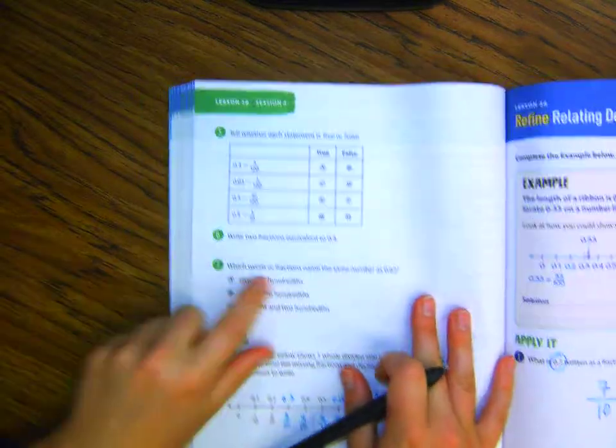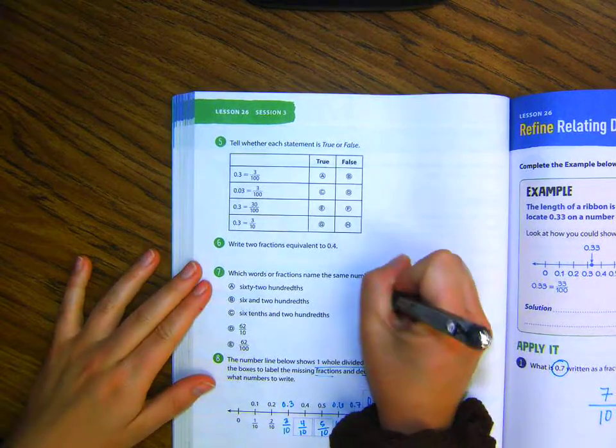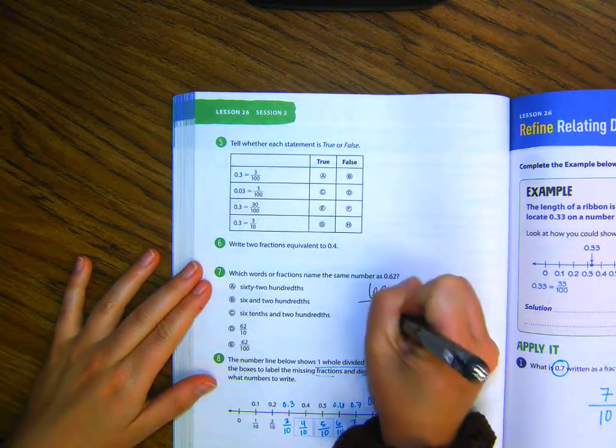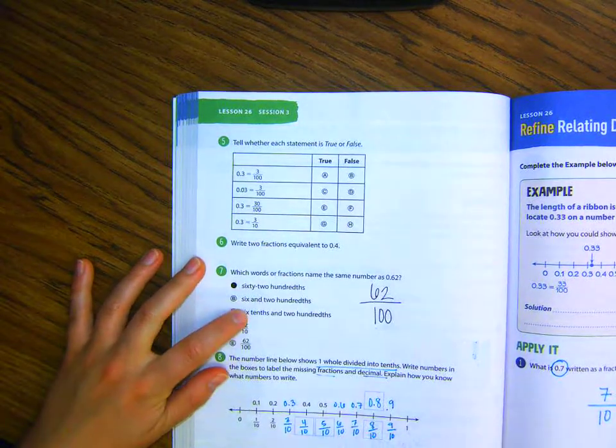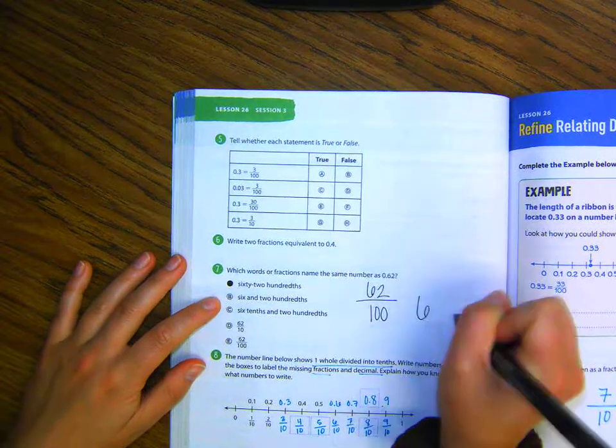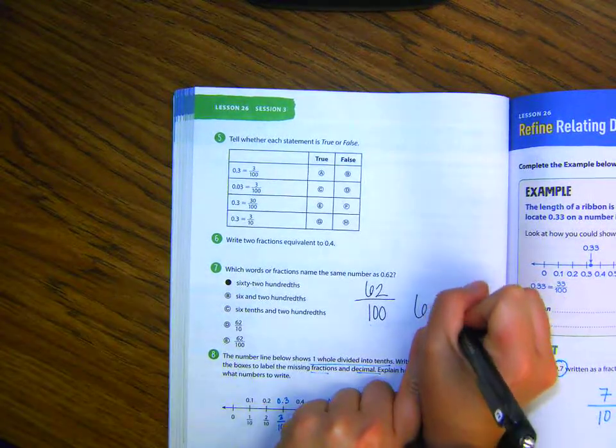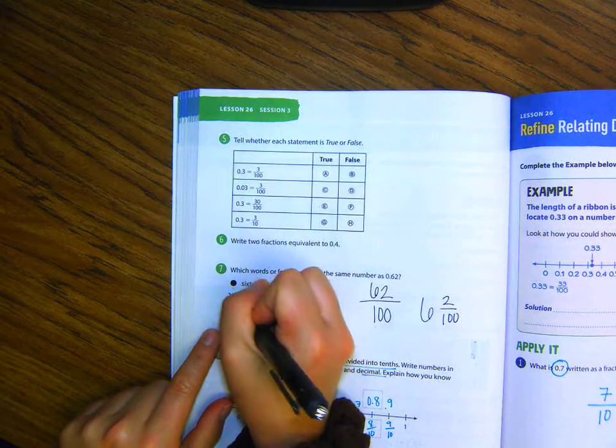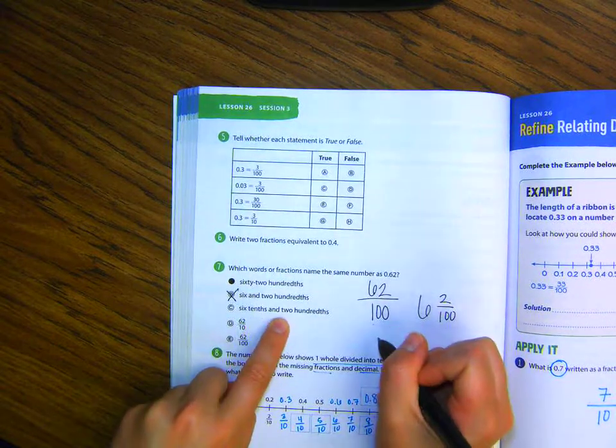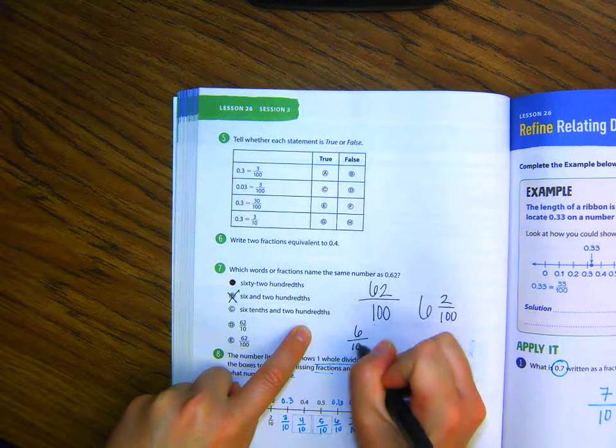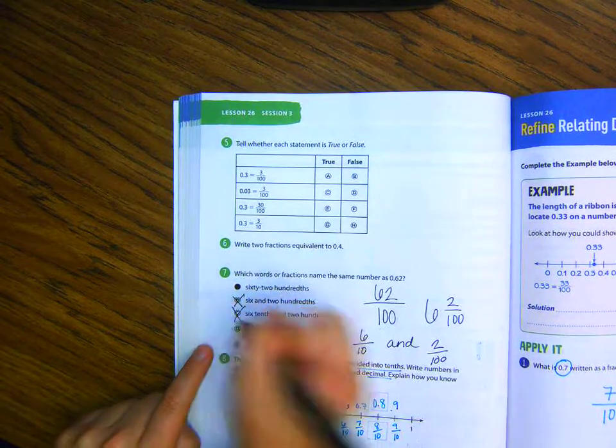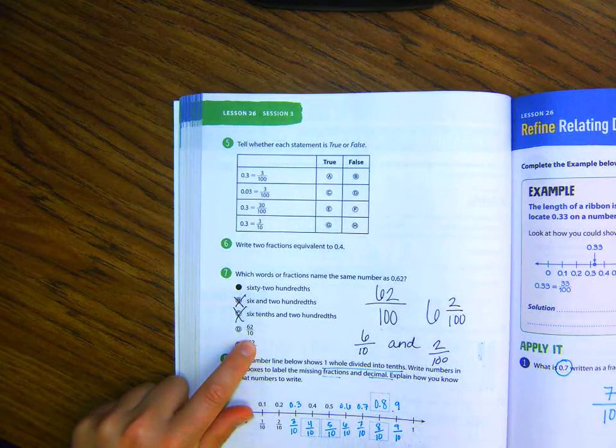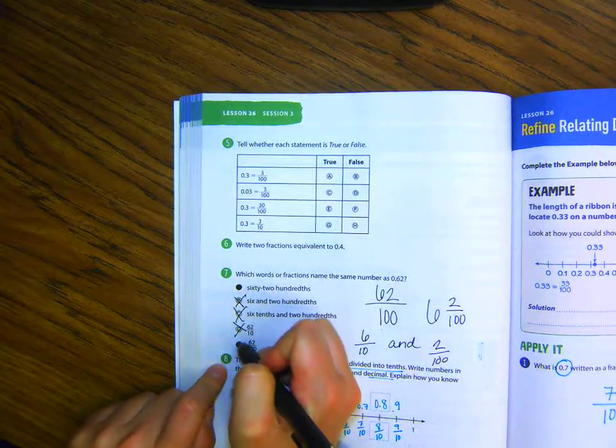Number seven on page 550. Which words of fractions name the same number as sixty-two hundredths? So, A says sixty-two hundredths. That's correct. Six and two hundredths. That would mean six and, then we have our fraction two hundredths. That's not the same. Six tenths and two hundredths. That would mean it's separate. So, that's not the same. Sixty-two tenths? No. Or sixty-two hundredths. So, just A and E.